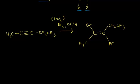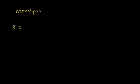Let's take a look at one more reaction of alkynes: ozonolysis. We've seen a similar reaction before when we did this with alkenes. This time we're going to do it with alkynes. Let's take an internal alkyne, meaning the triple bond is found in the interior of the molecule, not on the end. Let's look at ozonolysis of internal alkynes first. When doing ozonolysis, you add ozone to the molecule in the first step.